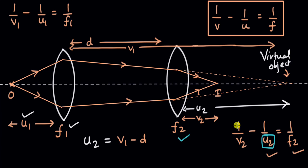That is how we can use the idea of virtual objects to figure out the distance of the final image whenever there are more than one thin lens. If the image from the first thin lens can never really be formed, then the point where the rays would have met acts as a virtual object for the second lens. You can try questions on this from the exercise in the lesson; if you're watching on YouTube, the exercise link is in the description.